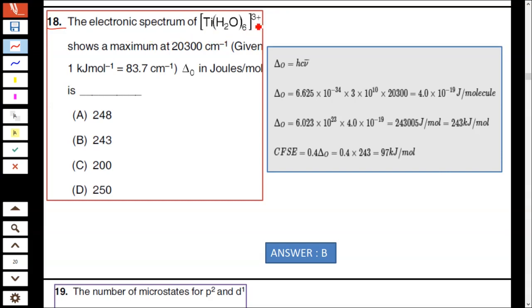Question number 18: The electronic spectrum of [Ti(H₂O)₆]³⁺ shows maximum at 20,300 cm⁻¹. Given 1 kilojoule equals 83.7 cm⁻¹, they are asking the energy. The energy is H·C·ν where H is Planck's constant and C is the velocity of light in centimeters.